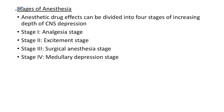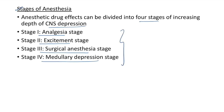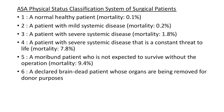Now let us see about the stages of anesthesia. Anesthetic drug effects can be divided into four stages of increasing CNS depression. Stage one is the analgesia stage, stage two is the excitement stage, stage three is the surgical anesthesia stage, and stage four is the medullary depression stage.